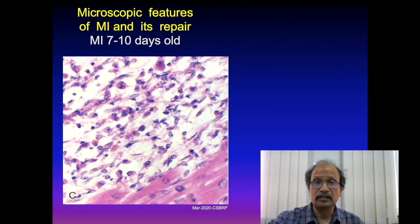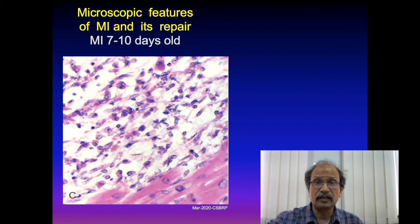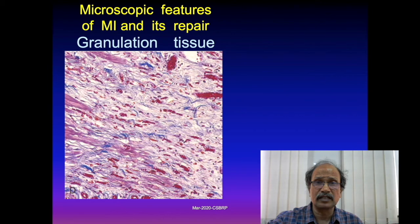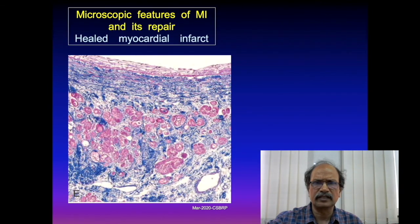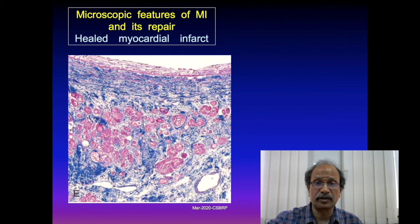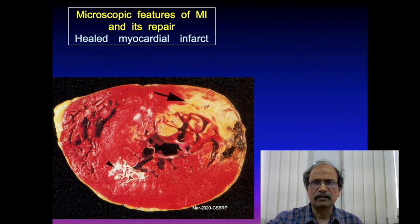Early granulation tissue progresses to late granulation tissue with predominant collagenization seen as bluish-colored areas. The infarcted area eventually forms a scar, appearing yellowish or whitish grossly as shown by the arrows. Microscopically, fibroblastic proliferation replaces the lost tissue, with a pale fibrous area at the center.